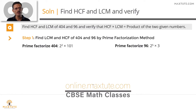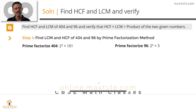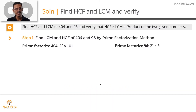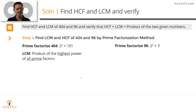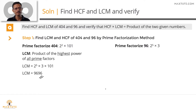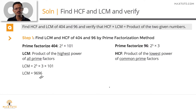We have prime factorized the two numbers as 2² × 101 and 2⁵ × 3. LCM is the product of the highest power of all prime factors — 2, 3, and 101 — with respective highest powers 5, 1, and 1. Therefore LCM = 9696. HCF is the product of the lowest power of common primes. The only common prime is 2, with lowest power 2. So HCF = 2² = 4.